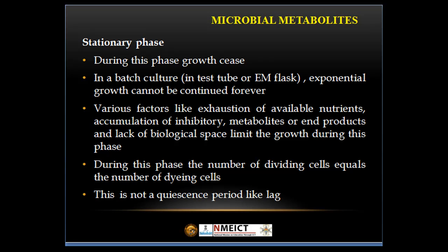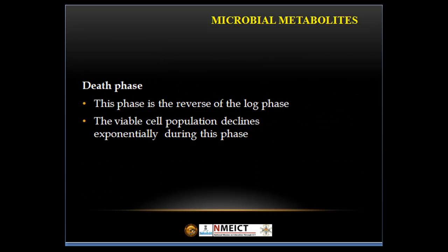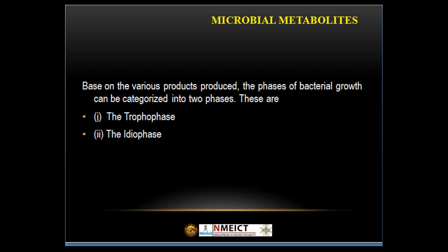Third phase, that is, stationary phase. During this phase, growth ceases. Exponential growth cannot be continued forever. Various factors like exhaustion of available nutrients, accumulation of inhibitory metabolites or end products, and lack of biological space limit the growth during this phase. The number of dividing cells equals the number of dying cells. Fourth, death phase. This phase is the reverse of the log phase. The viable cell population declines exponentially during this phase. Based on various products produced, the phase of bacterial growth can be categorized into two phases: trophophase and idiophase.